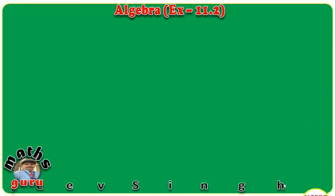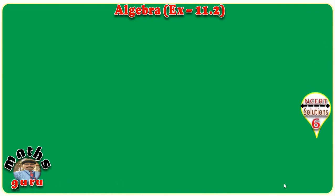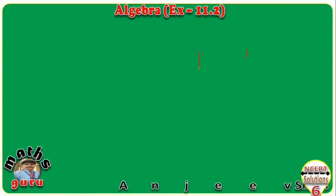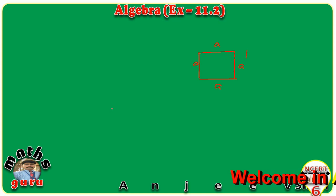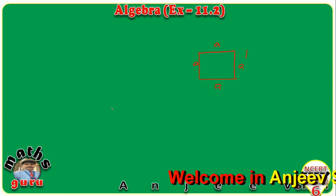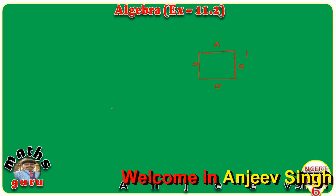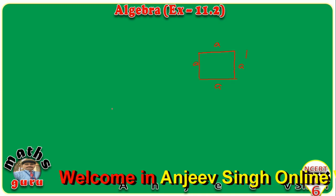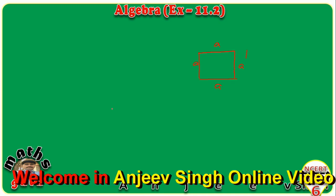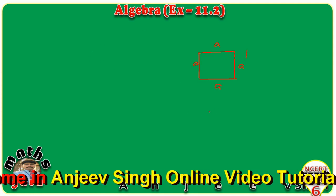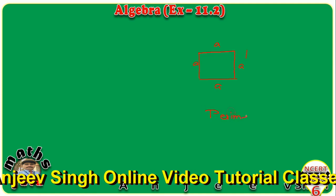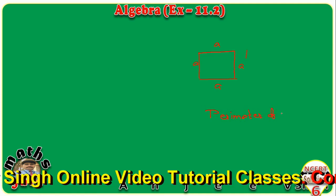In Exercise 11.2, we will learn how to make equations. Suppose we have a square, and assume that each side of the square is 'a'. Now, what does perimeter mean? The sum of all sides is called the perimeter. A square has 4 sides, so the perimeter of a square is 4a.